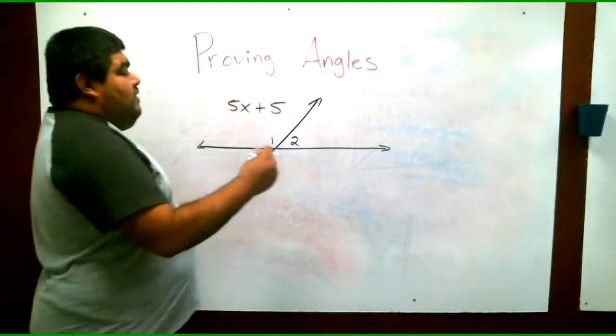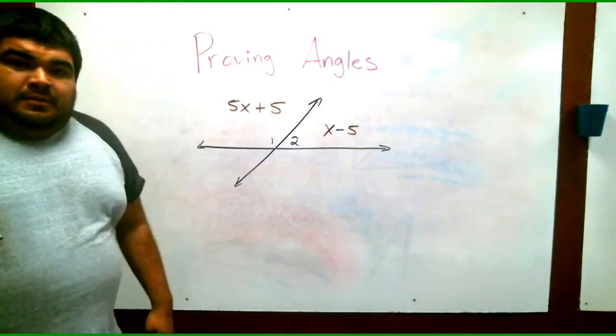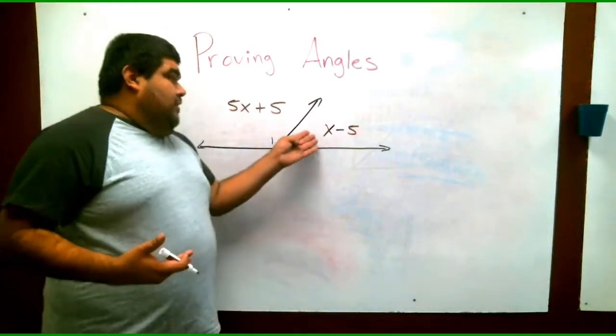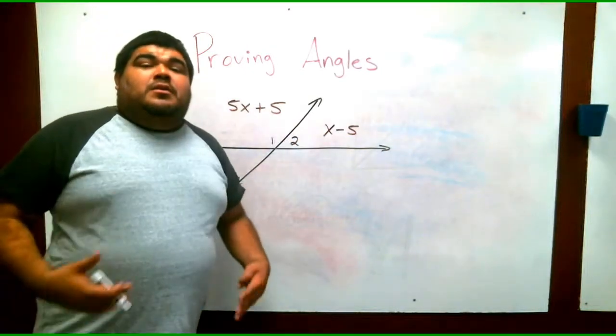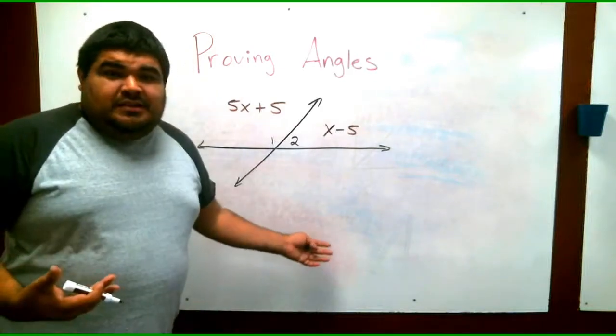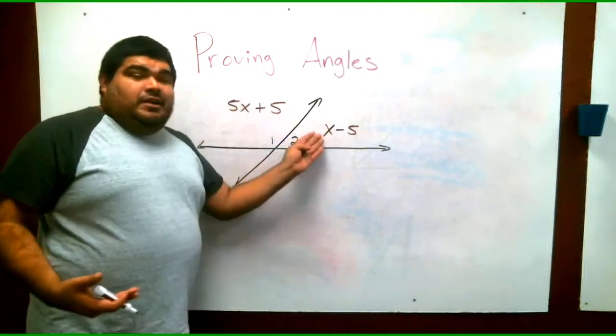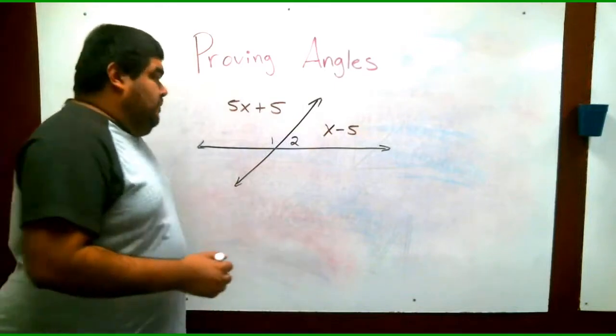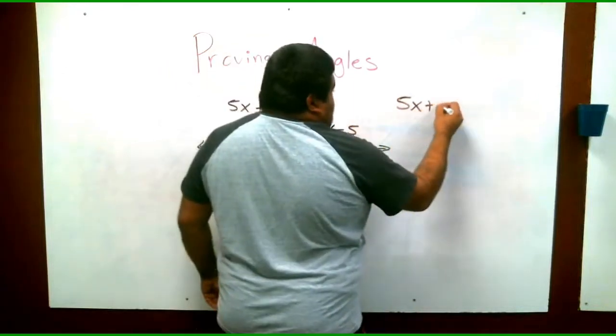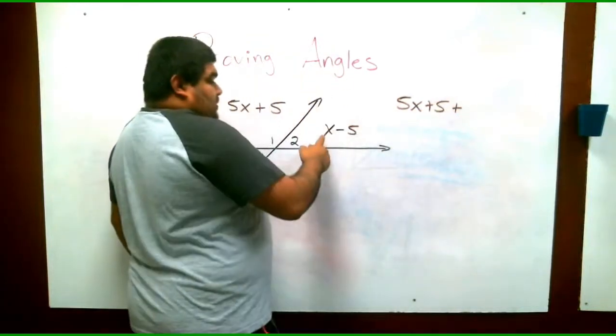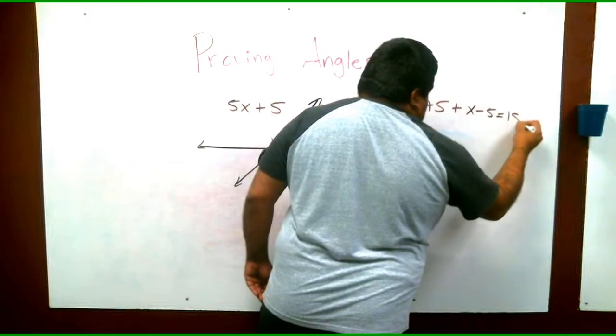It tells us that the angle over here, angle two, is x minus 5. Obviously, in order to find the angles, we have to solve for x to plug it in. But in order to solve for that angle, remember on the previous part, the beginning of this concept, we have to find the value of x by combining them, right? And then equal them to 180 because that's the rule. So we have 5x plus 5 plus the other problem, because remember, we combine them together, x minus 5 equals 180.